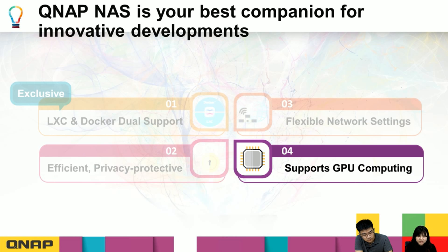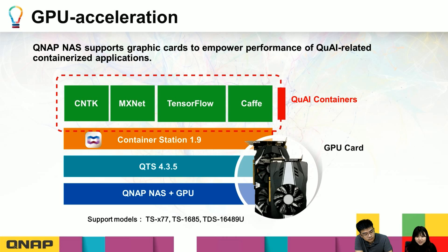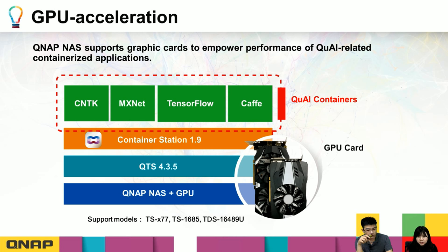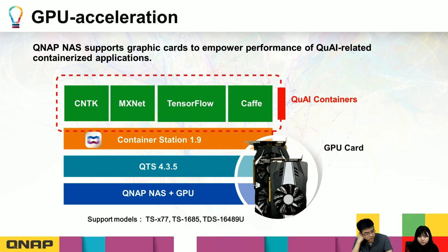The fourth benefit is GPU support. You can install graphics cards on your NAS to empower performance, especially for artificial intelligence containers. GPU acceleration is very powerful for tasks like image recognition or language processing. The speed difference between using GPU and CPU can be three to four times faster.